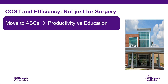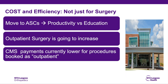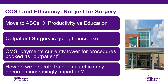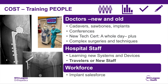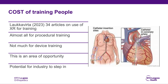On VR, the over-drilling for haptic learners was lower right away — it took the non-haptic learners a few tries before they stopped plunging. On the sawbones also, the haptic group plunged consistently less than the non-haptic learners. You can make residents safer with haptic learning, and safer quicker. Cost and efficiency are really important as we move to ambulatory surgery centers — we have to balance productivity versus education. In 2023, there were 30 articles on the use of XR for training, but almost all of them were for procedures, with not much on learning how to use specific devices. This is an area of opportunity where industry can partner with us to develop this technology.